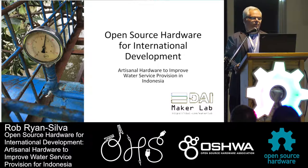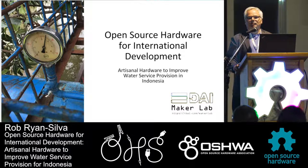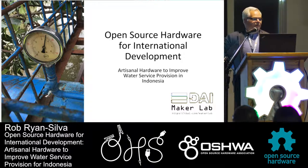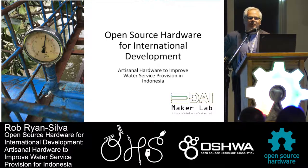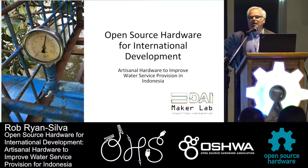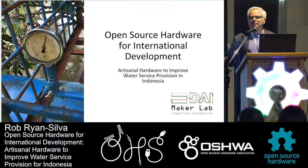As Kat said, my name's Robert Ryan Silva, but we're all friends here, so you're welcome to call me Rob. I work for a company called Development Alternatives Incorporated, or DAI. DAI is an international development company — we're engaged by donors, usually the foreign aid agencies of developed country governments like USAID or the UK's Department for International Development, to implement projects that build the capacities of people and institutions in developing countries. I run an initiative called the DAI Maker Lab, charged with using tools and approaches from the maker community and applying those to building hardware in support of development projects.